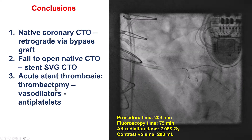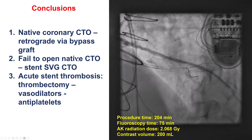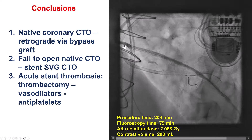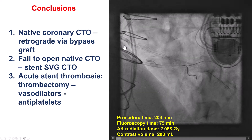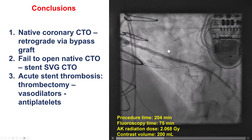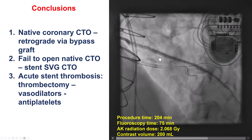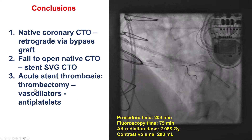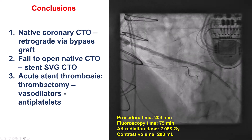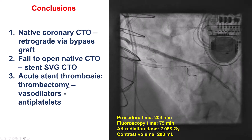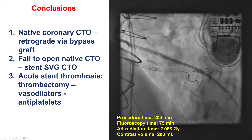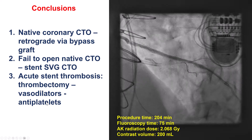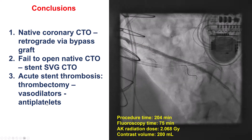The other lesson is about acute stent thrombosis — it can happen. This vein graft may have been occluded not too long ago and may carry some thrombus with risk of distal embolization. Solutions when there is no-reflow and stent thrombosis include thrombectomy, vasodilators, and more aggressive antiplatelet therapy — which included cangrelor in our patient.